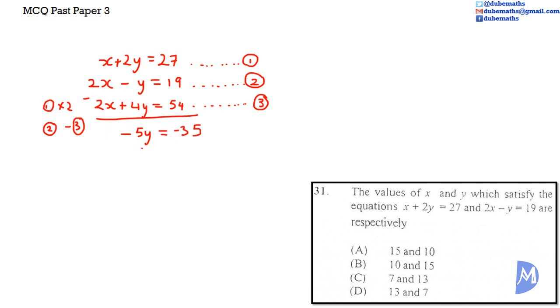Dividing both sides by negative 5. The negative 5's would cancel. To remain with Y is equal to negative 35 divided by negative 5 is equal to 7. Y is equal to 7. So the answer is D.